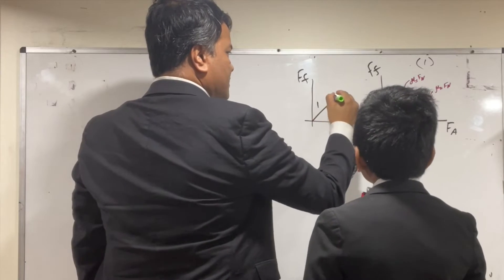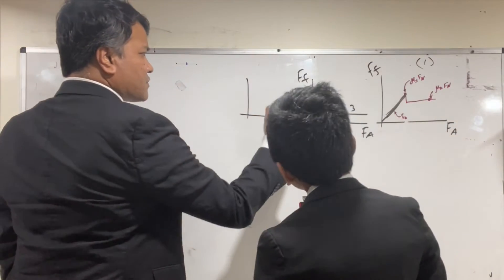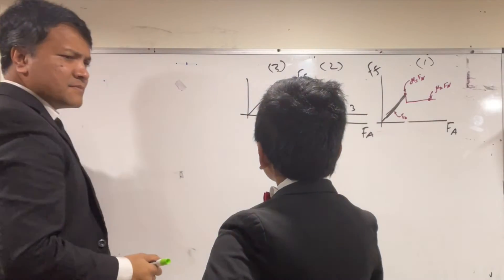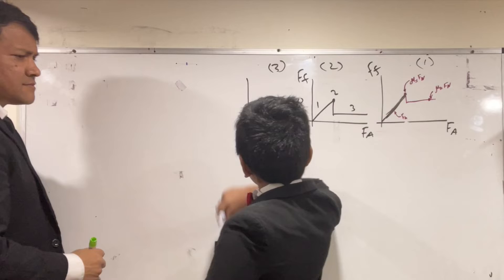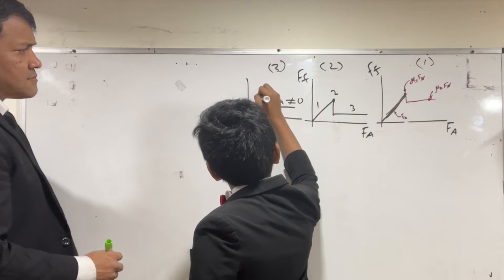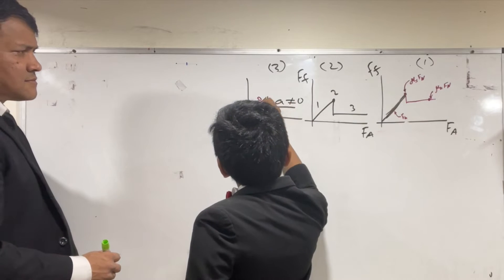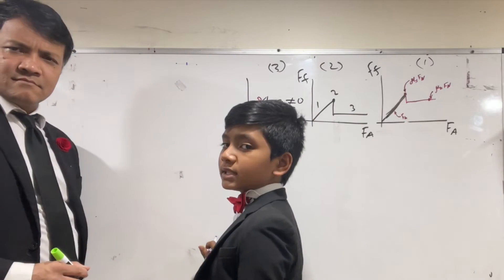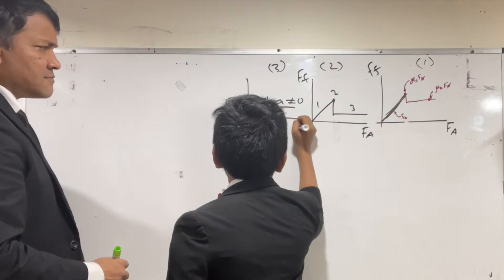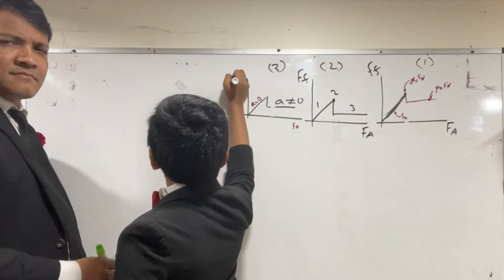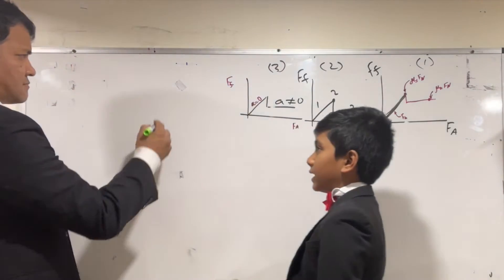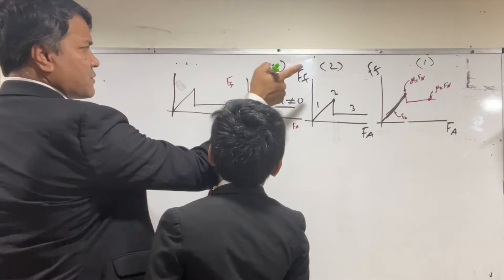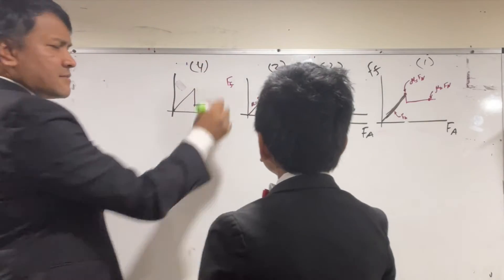I'm going to draw graphs one, two, and three. This is two and this is three and zero. Over here — which we will be using — regions one and two: the acceleration is equal to zero because the net force in the x-direction is the same as fa. The two forces cancel each other out, so acceleration equals zero.